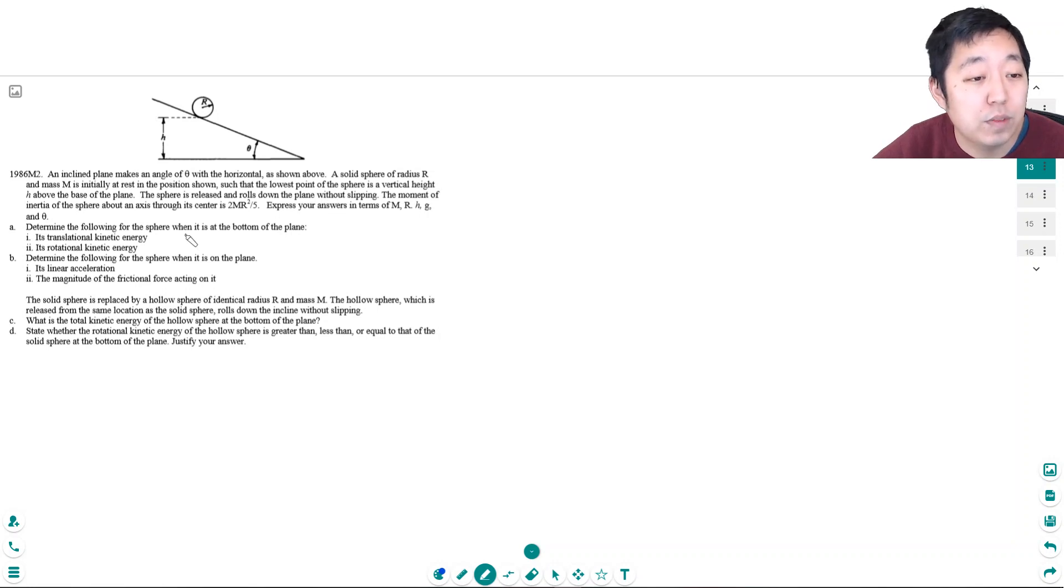The moment of inertia of the sphere, that's rotational inertia, is two-fifths mr squared. Express your answer in terms of m, r, h, and g. Determine the following for the sphere when it's at the bottom of the plane: its translational kinetic energy and rotational kinetic energy.